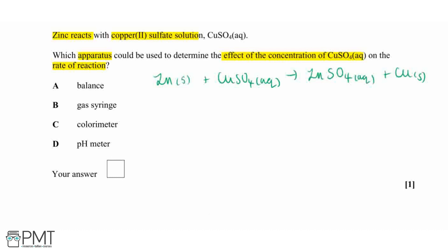what we can see straight away is that we don't have an acid base reaction. So we don't have a proton donor or a proton acceptor. Therefore using a pH meter will not help us to determine the effect of the concentration of copper sulfate on our rate of reaction because we're not going to be getting any significant changes of pH in this reaction.